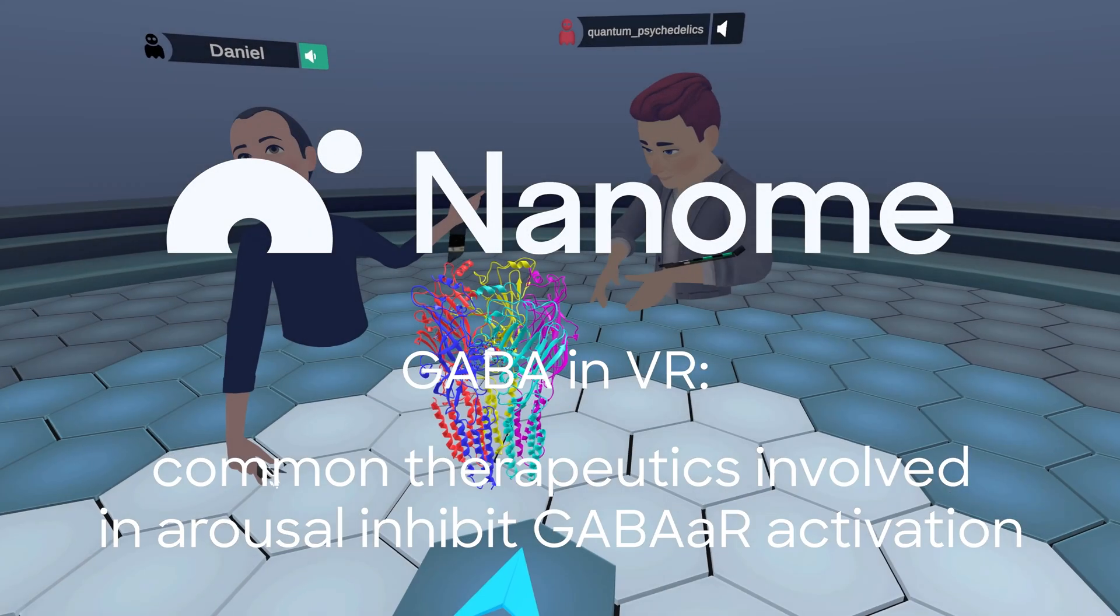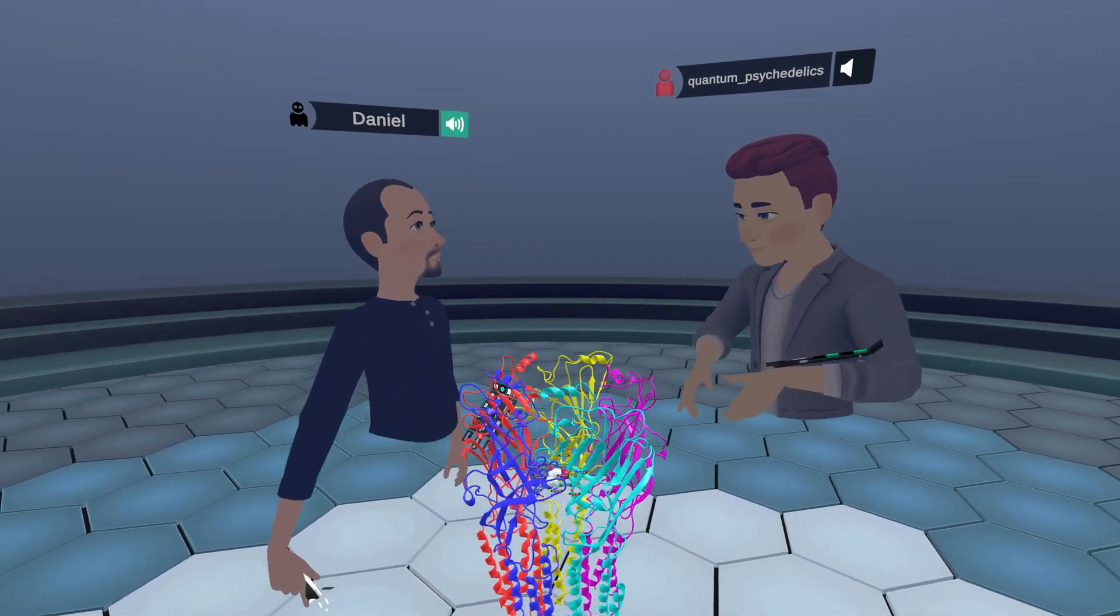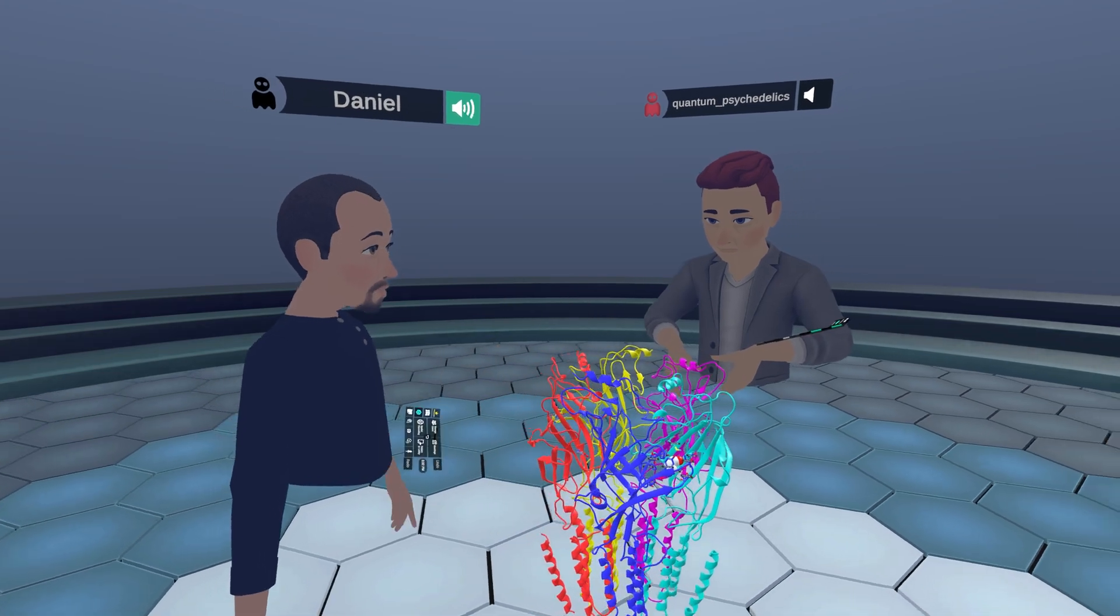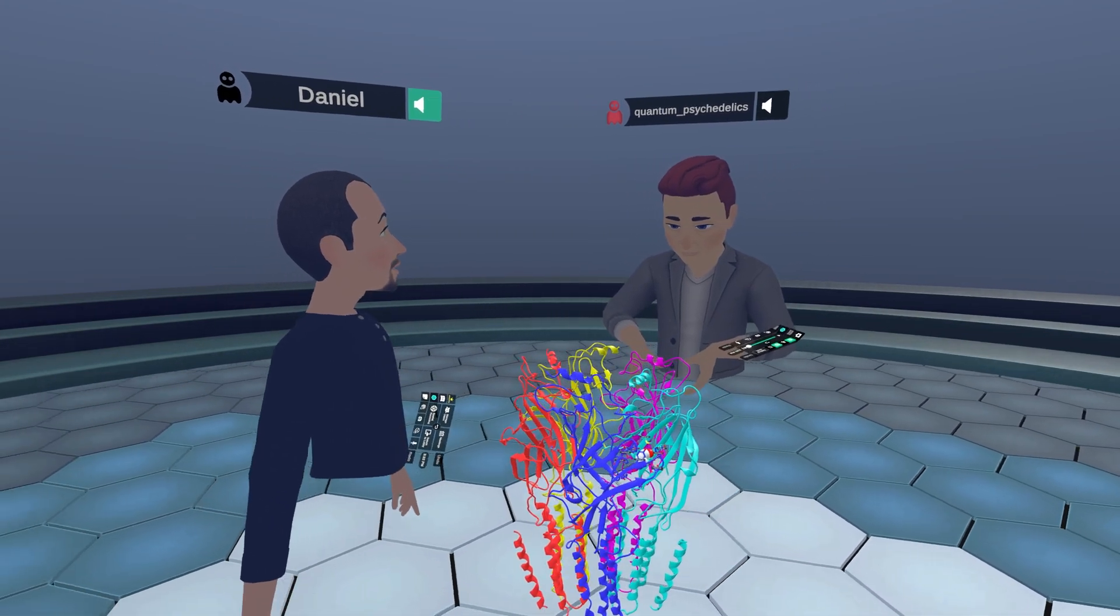Today we have Asher Brandt, again. He's a professor of biochemistry at the University of St. Joseph in Connecticut, and he has some updates on his latest project on GABA receptors.